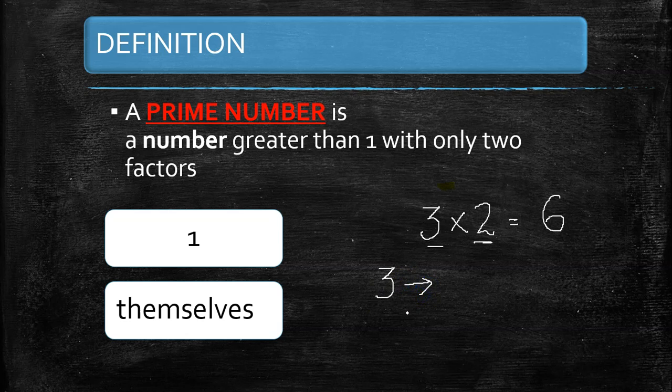How many factors? The factors of 3 are 1 and 3 — if we multiply any combination, 1 × 3 gives us 3, so 3 has exactly two factors.